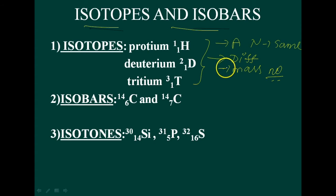Why is the mass number different? Because of the neutrons present in the nucleus — different numbers of neutrons are present in the nucleus.